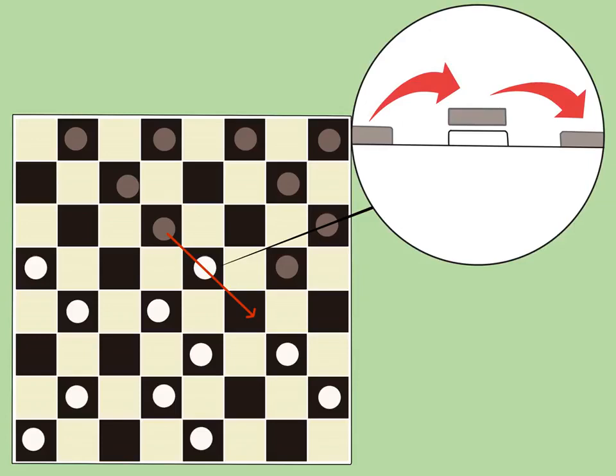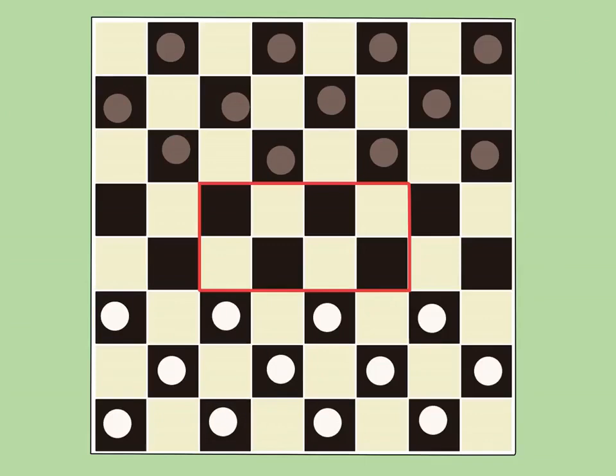For example, if you have five checkers and your opponent has four checkers, then the board is almost equal. But once you trade three pieces each, you have a huge advantage with twice as many pieces as your opponent: two to one.